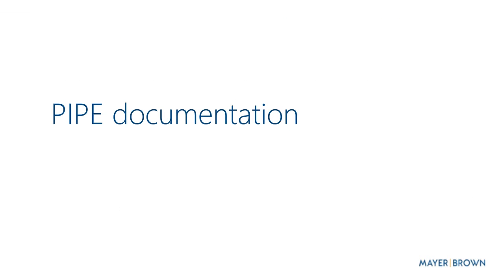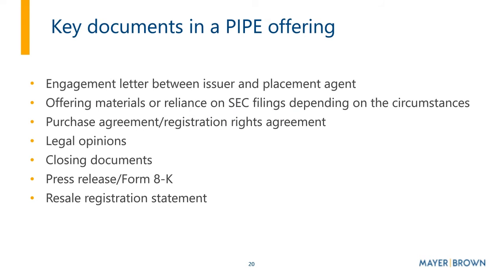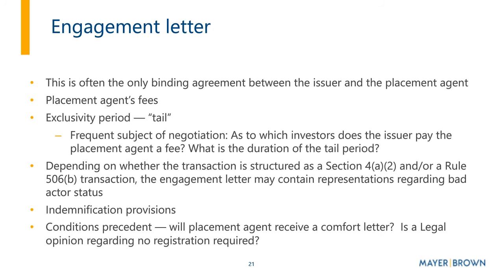Key documents in a PIPE offering include the engagement letter, offering materials — or in some circumstances no PPM, with reliance on existing SEC filings — the purchase agreement, possibly a registration rights agreement, legal opinions, other closing documents, a press release and Form 8-K, and the resale registration statement. For traditional PIPEs, most issuers engage a placement agent to help structure and market the transaction. The engagement letter outlines obligations between the issuer and the placement agent. The agent is generally paid a fee of about 4% to 6% of gross proceeds, and may also receive warrants as compensation.